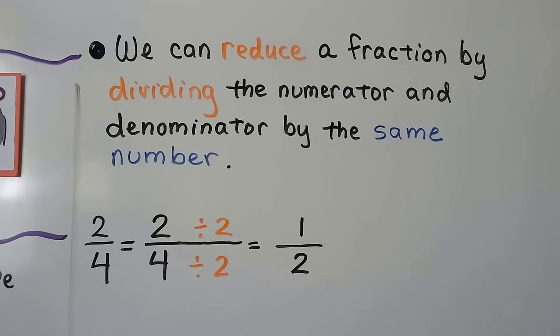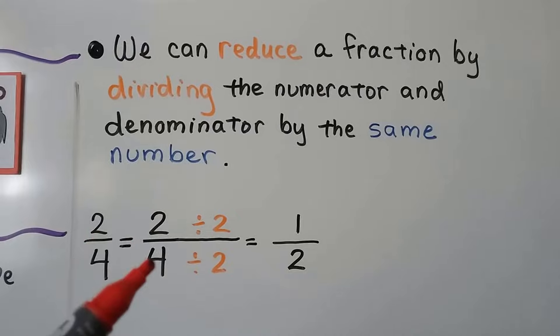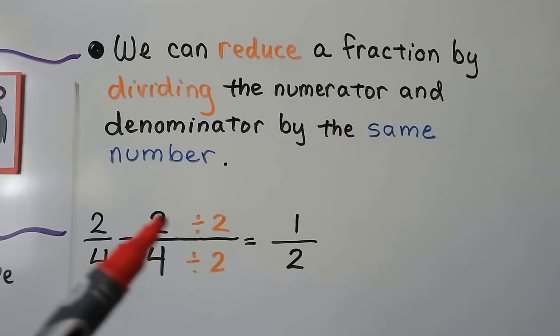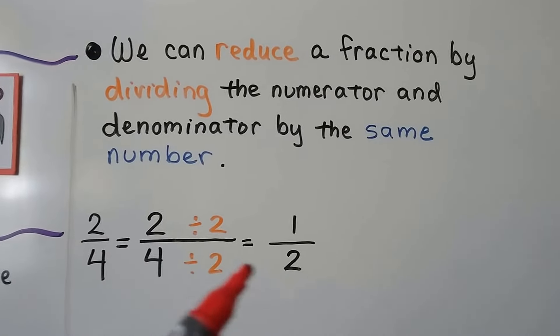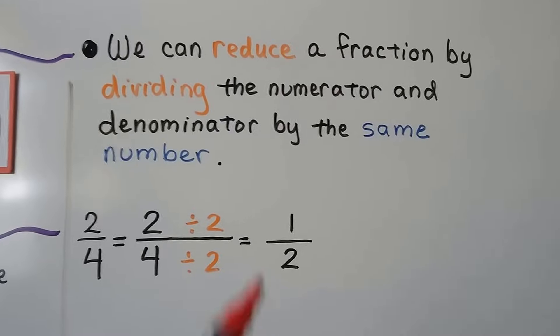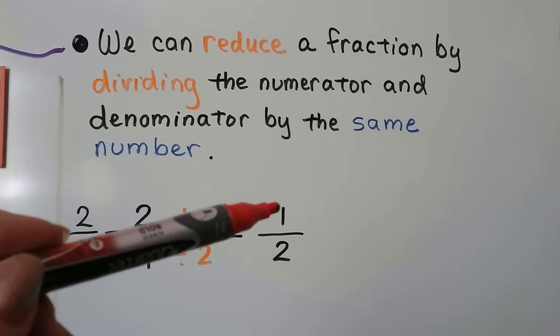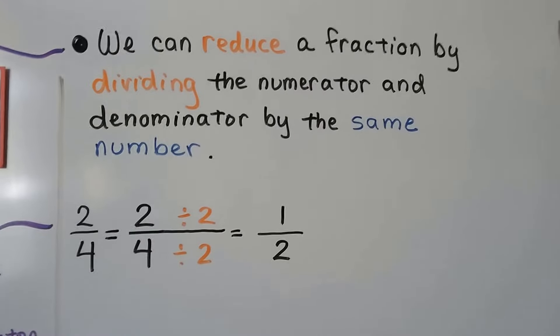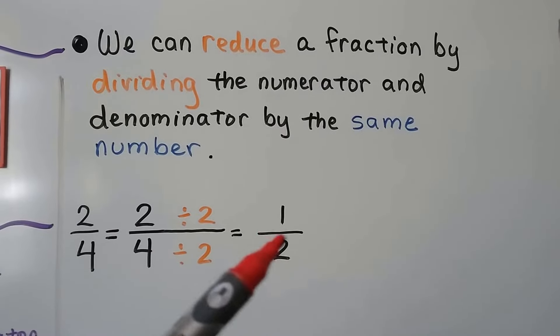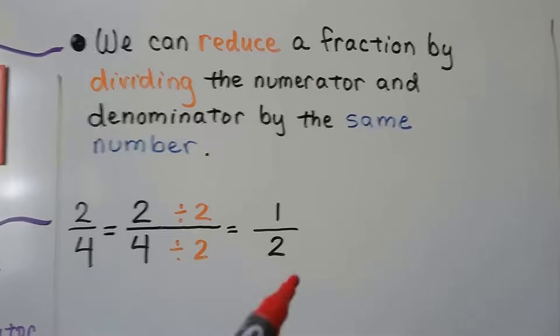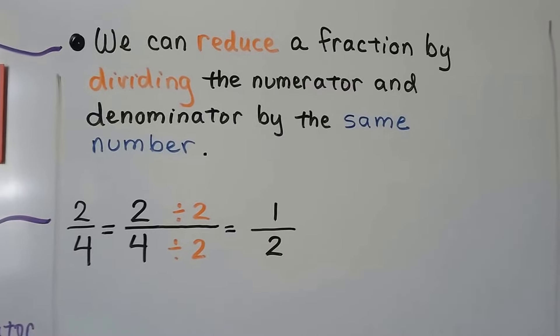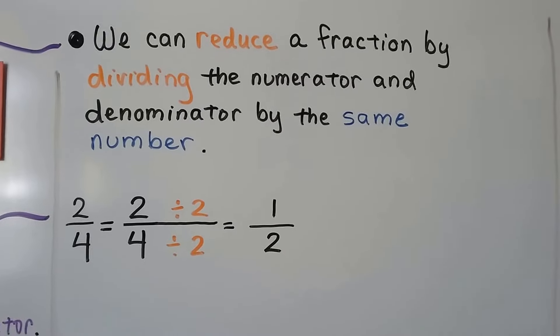If we have 2 fourths, we can divide the numerator by 2 and the denominator by 2. 2 divided by 2 is 1. 4 divided by 2 is 2. It can't get any smaller than half. So you know it's as small as it can get when the numerator is a 1. Or if 1 is the only number that it could be divided by, that's it. It's as far as it can go.